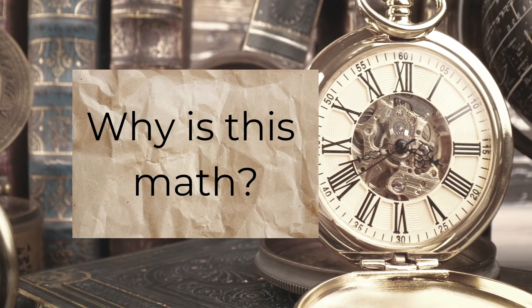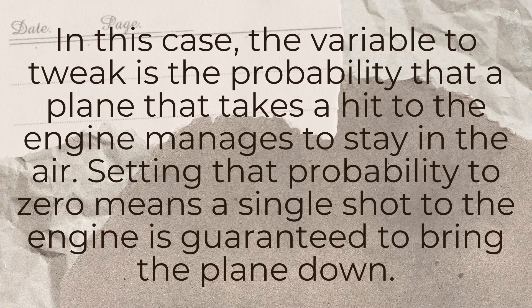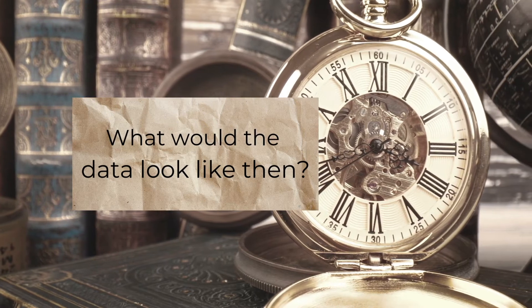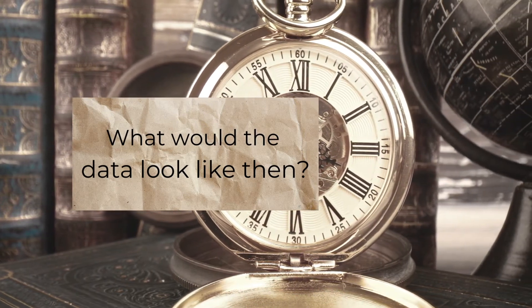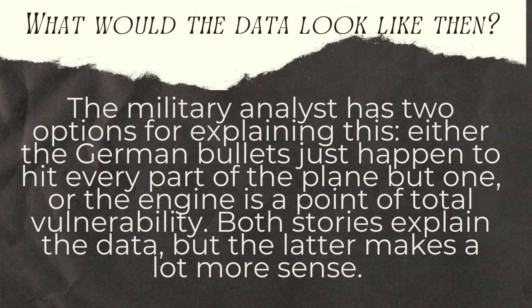Here's an old mathematician's trick that makes the picture perfectly clear: set some variables to zero. In this case, the variable to tweak is the probability that a plane that takes a hit to the engine manages to stay in the air. Setting that probability to zero means a single shot to the engine is guaranteed to bring the plane down. What would the data look like then? You'd have planes coming back with bullet holes all over the wings, the fuselage, the nose — but none on the engine. The military analyst has two options: either German bullets just happen to hit every part of the plane except the engine, or the engine is a point of total vulnerability. Both stories explain the data, but the latter makes a lot more sense.